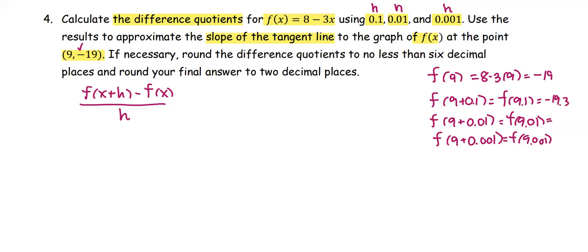For the function at 9.01, we get -19.03. And the last one, the function at 9.001, we get -19.003.